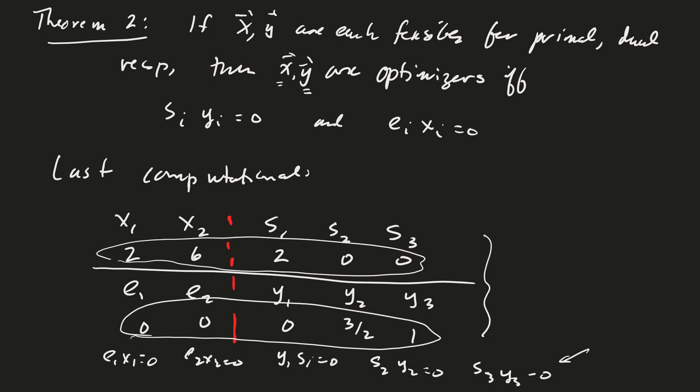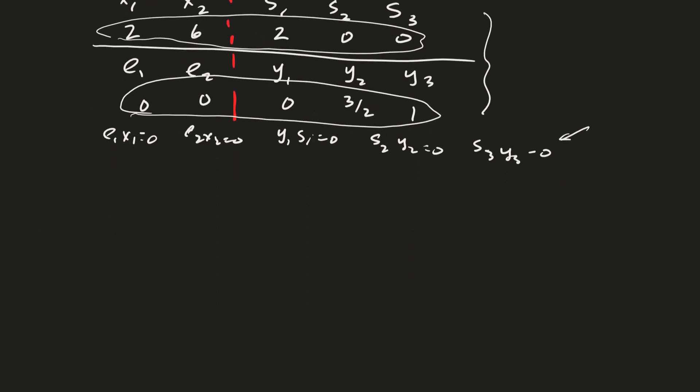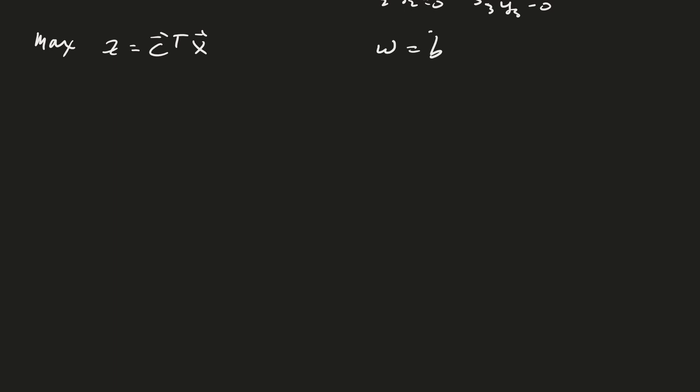Now why is that? Well, there's a couple of computations that we want to make before we actually prove this whole theorem, and I think it's worthwhile to actually see what some of this stuff is. So in particular, suppose that we have our primal and dual set up as max z equals c transpose x and w equals b transpose y.